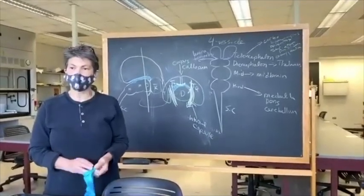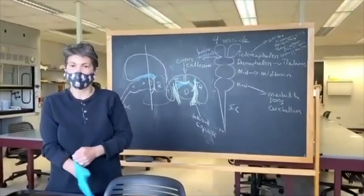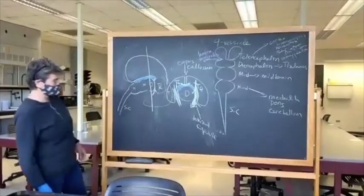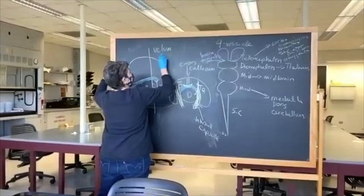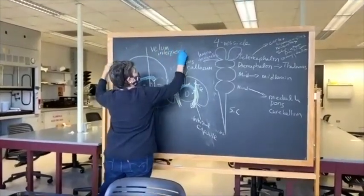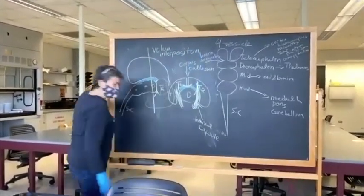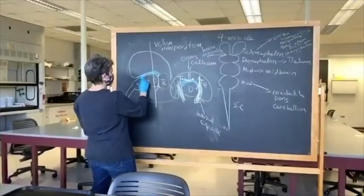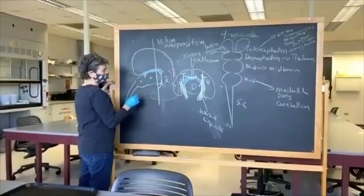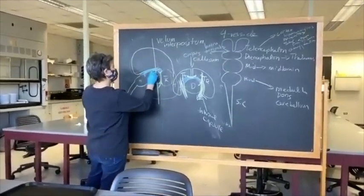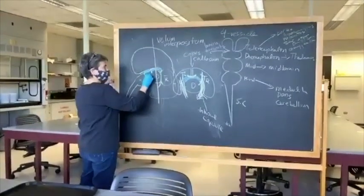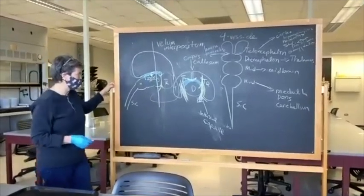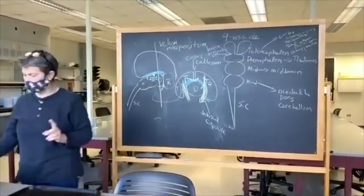Another question: that space between the diencephalon and telencephalon — is there a name for it? It is called the velum interpositivum. It actually stops right here at the pineal gland. The pineal gland sits right at the rostral edge of the midbrain.